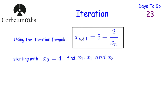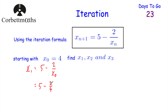So we've got the iteration formula xn+1 = 5 - 2/xn. To find the next value, you do 5 subtract 2 over the previous value. To find x1, we do x1 = 5 - 2/x0. Since x0 = 4, that's 5 - 2/4. Now 2/4 is 0.5, and 5 minus 0.5 equals 4.5. So x1 = 4.5.